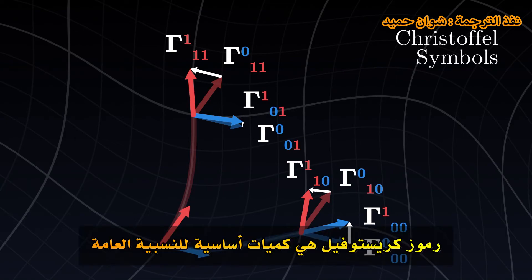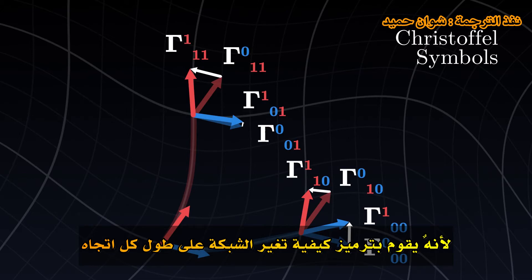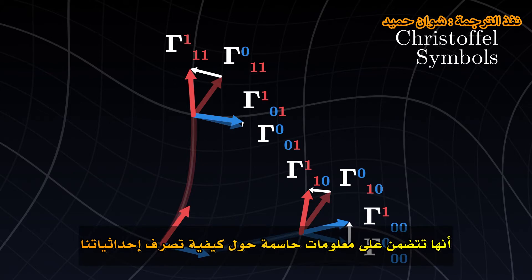The Christoffel symbols are essential quantities for general relativity, because they encode how the grid changes along each direction. They contain crucial information on how our coordinates behave.